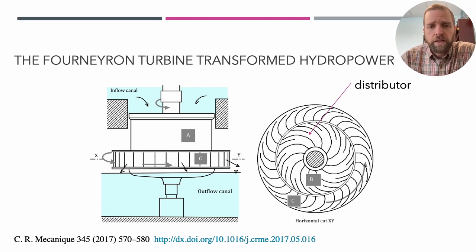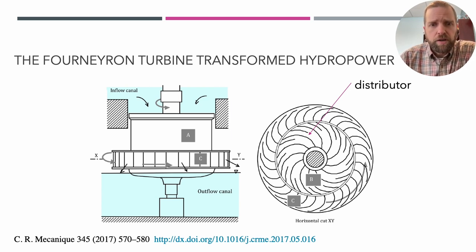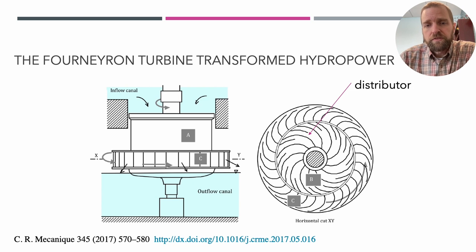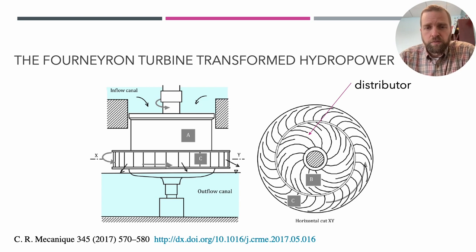That's where Fourneyron's turbine transformed hydropower. In his design, water flowed into the center of the turbine, down through a fixed distributor — labeled B in the figure — which directed the water radially outward to a spinning outer part of the turbine. It was an inflow-to-outflow water turbine.